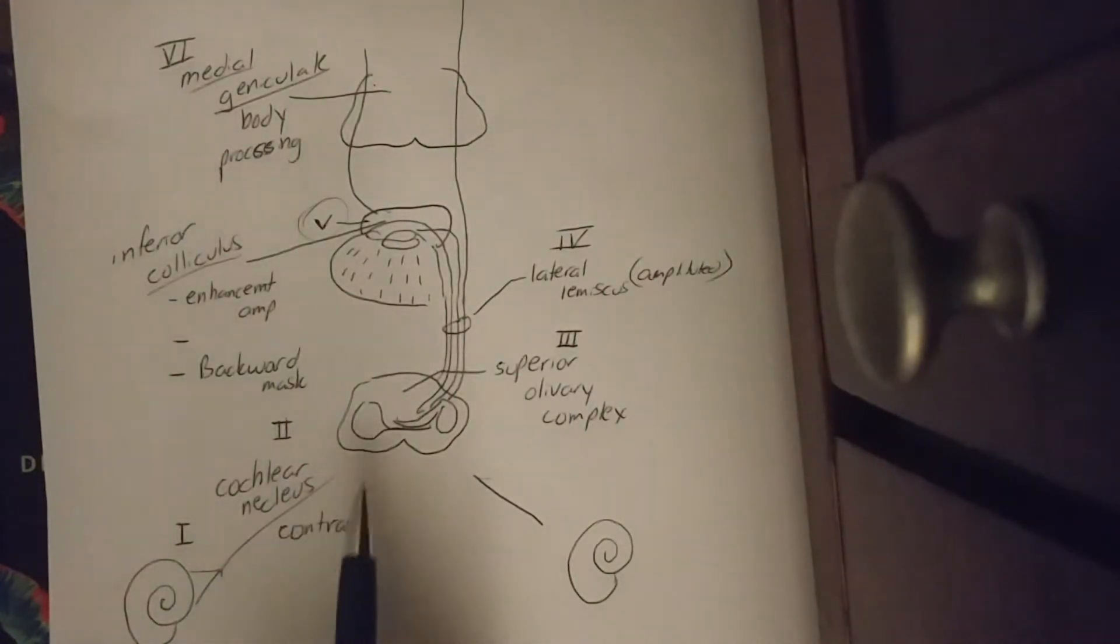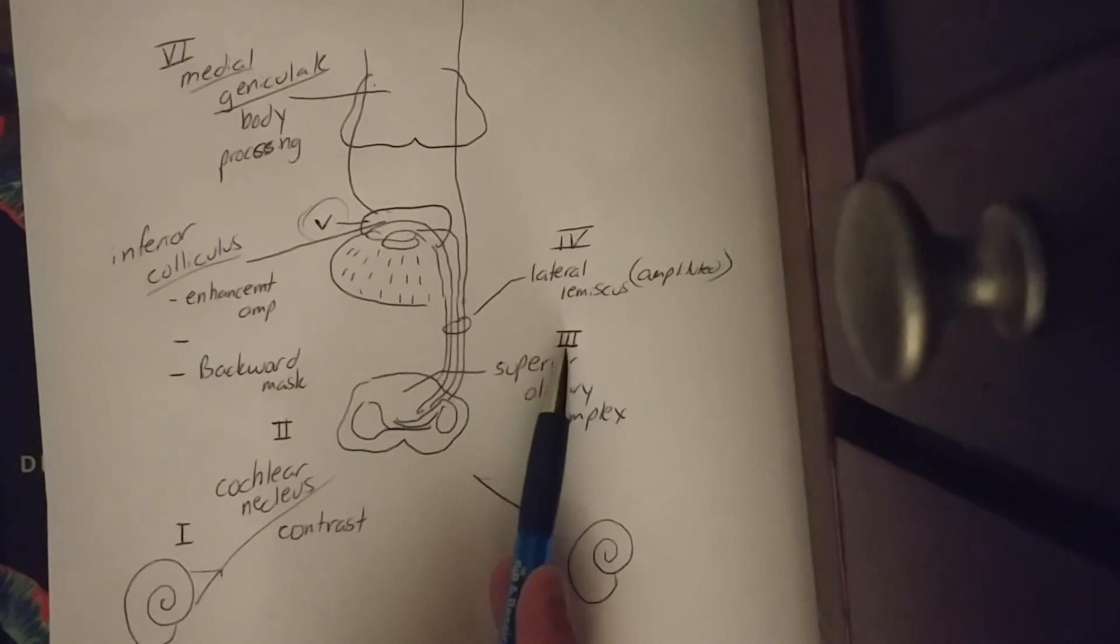As I get up to the superior olivary complex, we should know here that obviously we're dealing with localization. This is also where ipsilateral and contralateral information goes back and forth. And this is also where binaural fusion takes place. So I know to look to the left because sound hit the left ear before it hits the right, but it merges nicely in the superior olivary complex, which is wave three.